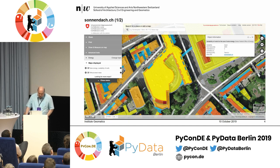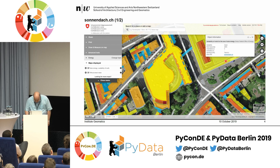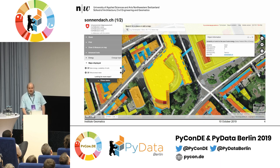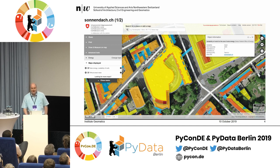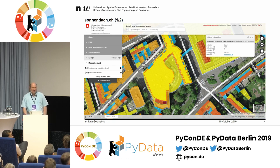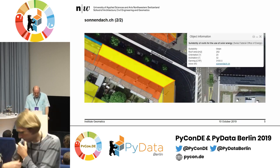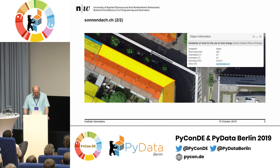This web service looks like that — you have every building in Switzerland, you can click on it and see how much money you get per year. For example, one building would be over 70,000 Swiss francs a year. This was in Basel, where EuroPython was held. We also have additional data like the inclination and so on for every building.